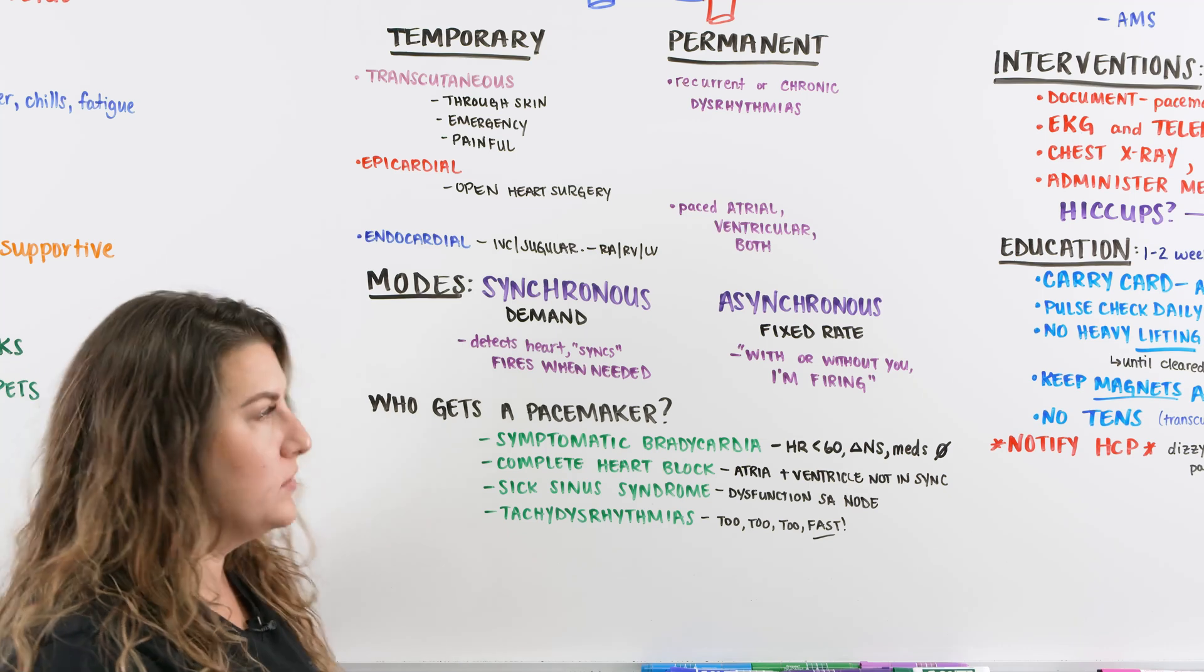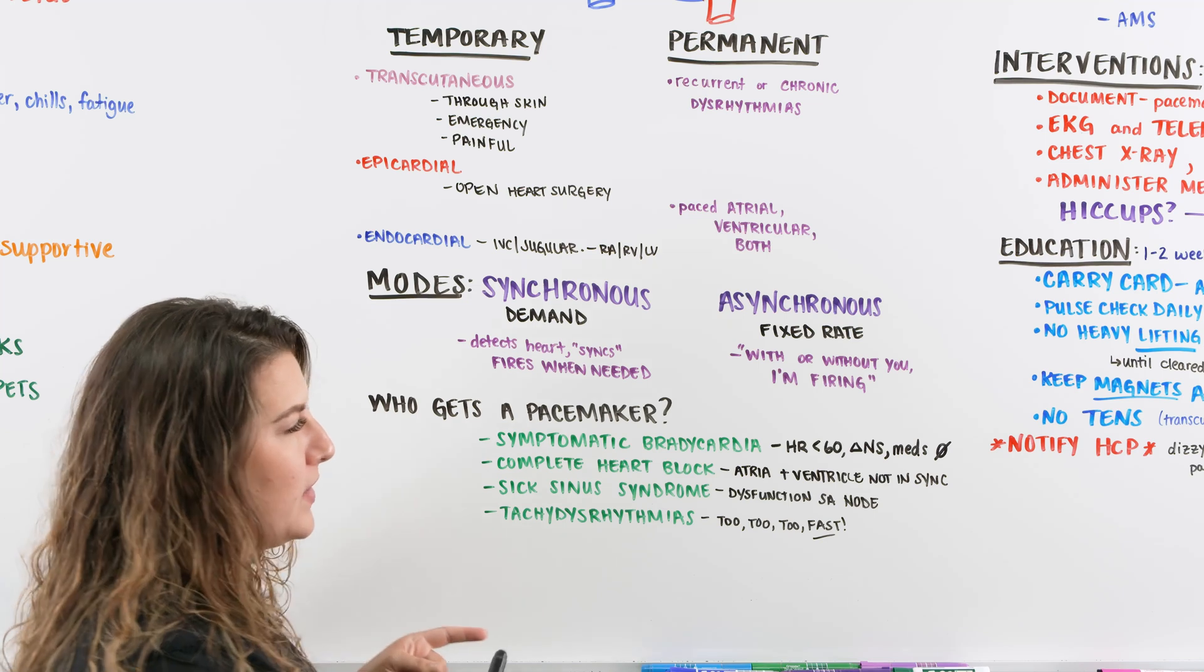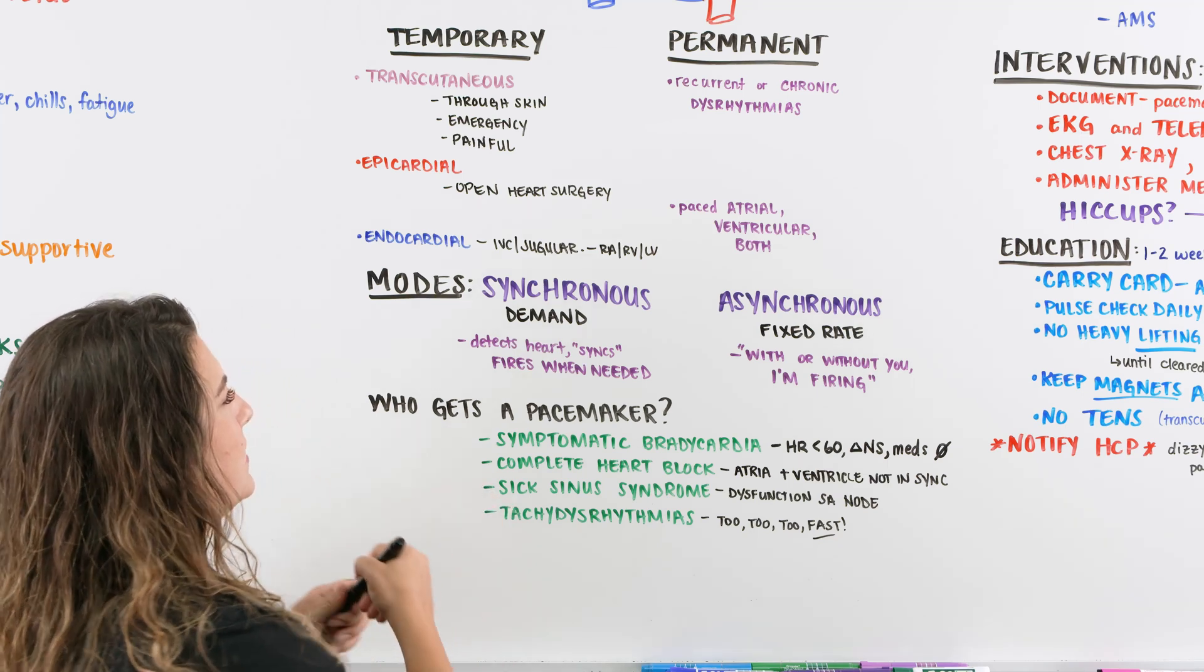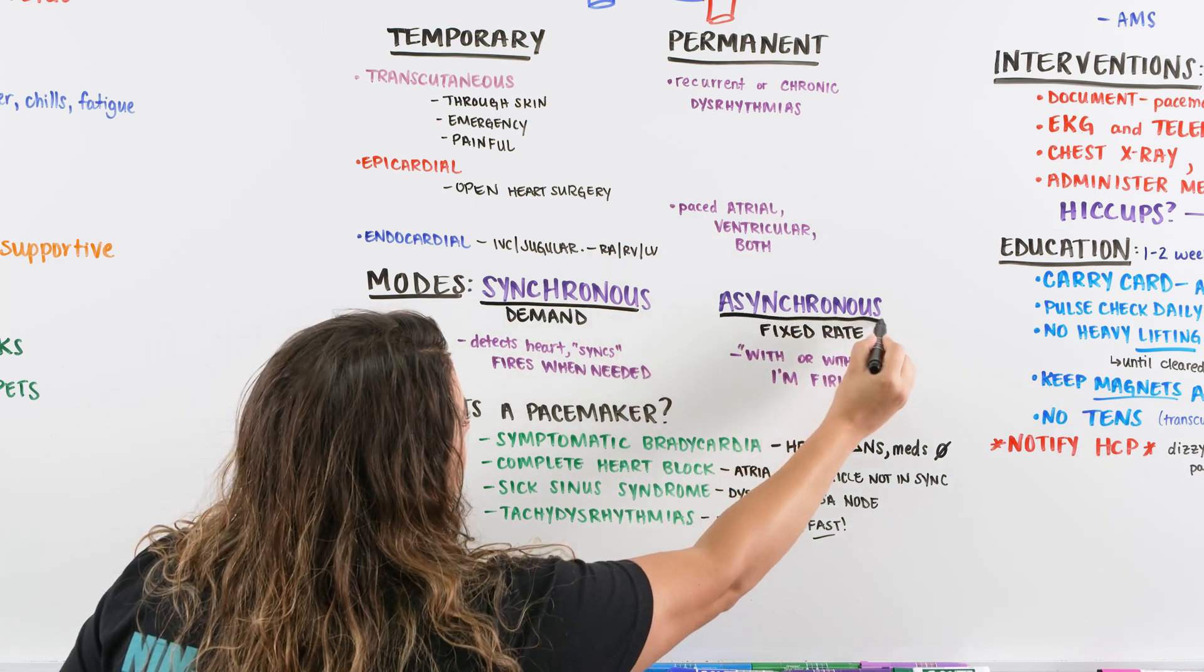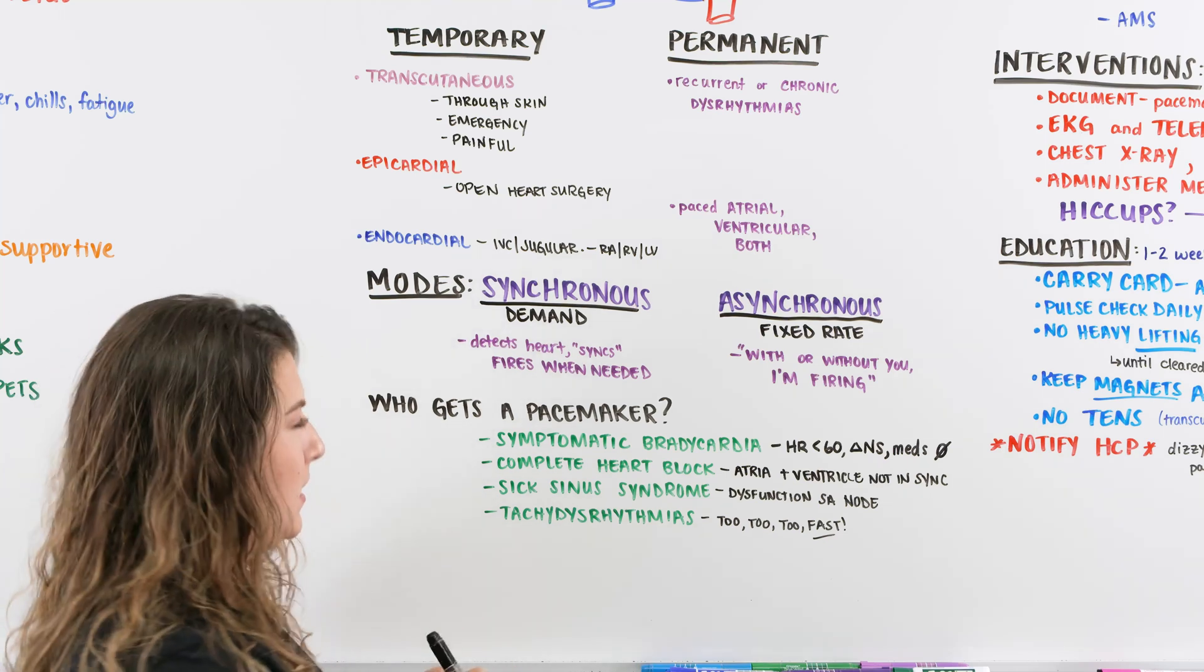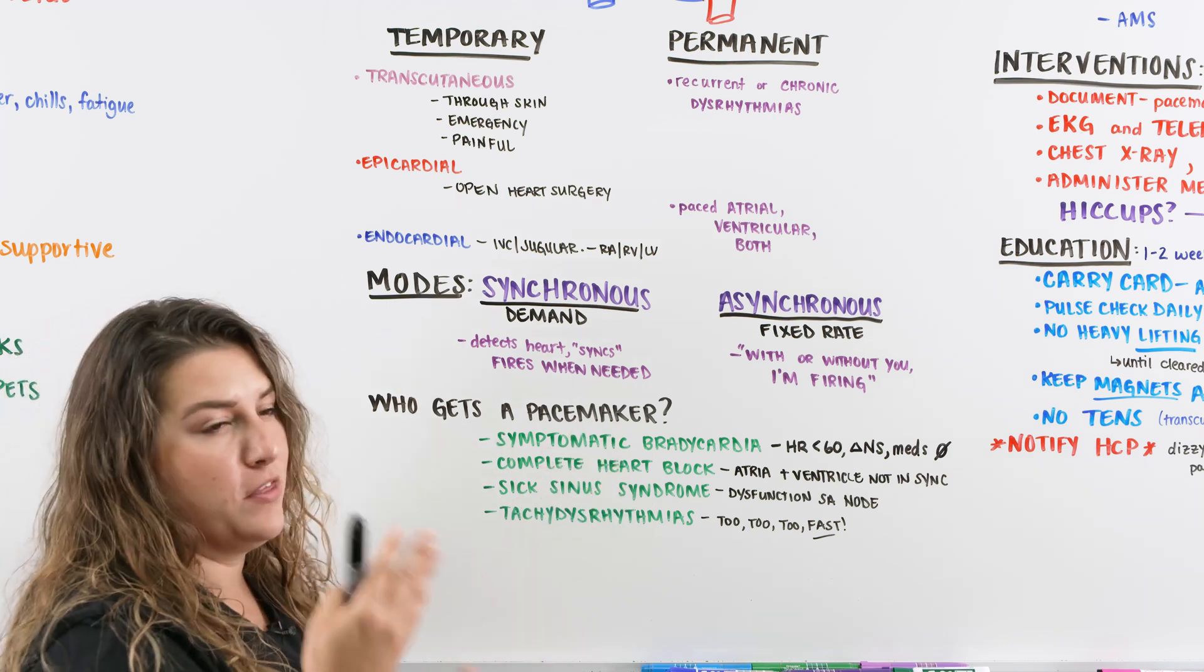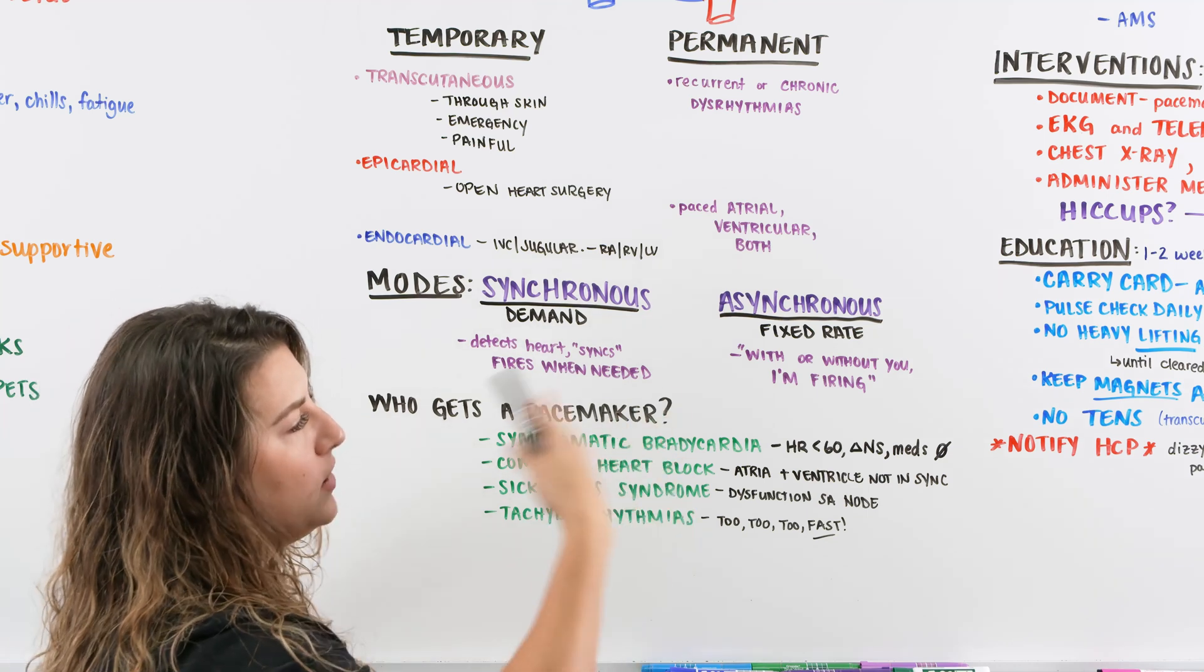Now we're going to talk about the modes. I want you to understand the modes because it's hard to make sense of them when you first hear them, but as you understand the concept it makes it easier. We have two modes: synchronous or asynchronous. We have the A in the front, it's just like systole or asystole, right? We have without or with. So we have synchronous, which is with the sync or like with the beat. Synchronous means to go with the beat and then asynchronous means without.